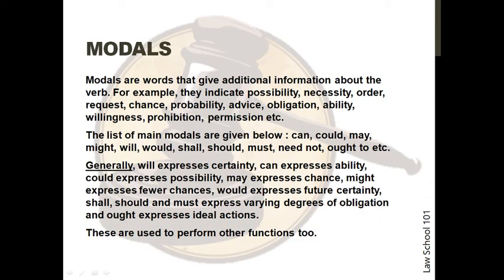Next are modals. Modals are words that give additional information about the function of the main verb. They indicate flexibility, necessity, order, request, chance, probability, advice, obligation, ability, willingness, prohibition, or permission. Generally, will expresses certainty, can expresses ability, could expresses possibility, may expresses chance, might expresses fewer chances, would expresses future certainty, shall, should, and must express varying degrees of obligation, and ought expresses ideal actions. They perform other functions too.